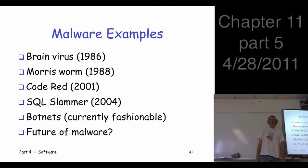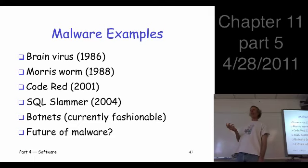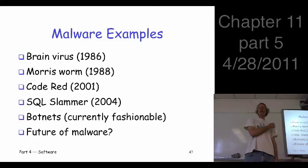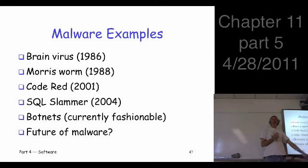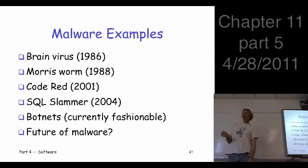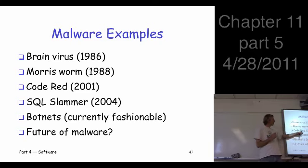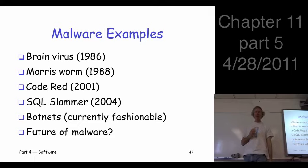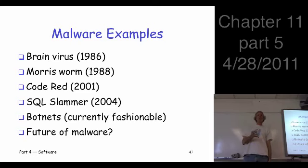We're going to look at some historical examples of malware and go through these pretty quickly. The Brain virus is one of the first viruses. Then the Morris worm — so notice we go from virus to worm, active propagation. In 1988, that's really early, and that worm had some very interesting features. Then we jump ahead to more modern examples: Code Red and Slammer. The current fashion in malware tends to be a little different — botnets seem to be the thing. Then we'll talk a little about the future of malware. I should warn you, malware is kind of one of my favorite topics — my master's students probably believe the majority of them do malware-related projects.